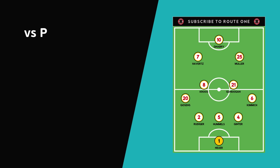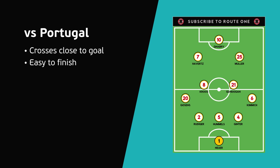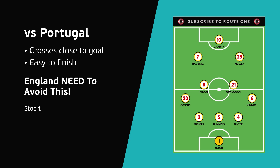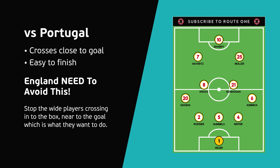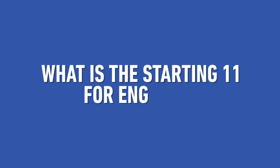Germany's goals against Portugal were close to the goal, and the chances they created made it easy to put in the back of the net. So this is what England need to avoid — stop the wide players from crossing into the box near to goal, which is what Germany want to do and what is most effective for them.